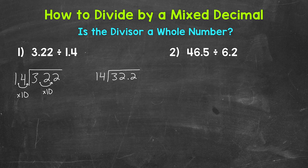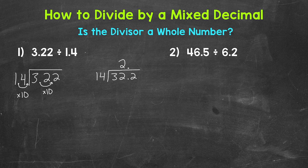Our dividend is 32 and 2 tenths divided by 14. Since the divisor is a whole number, we can bring the decimal straight up into our answer. Starting with divide: we have 3 divided by 14 — we can't do that, so we use the 2 and look at 32. How many whole groups of 14 in 32? That's 2, which gets us to 28. So the 2 goes above the 2 in 32, since we used both the 3 and the 2.